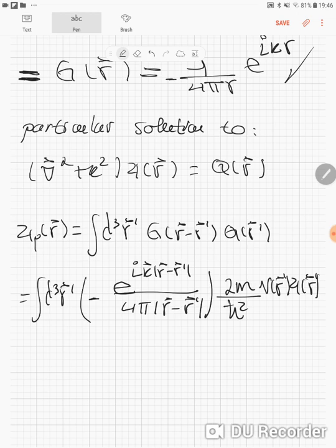After all, this is going to give us a contribution with a factor up front: minus M divided by 2h bar squared π, integral over d³r prime.